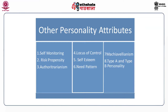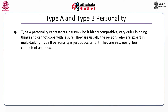Number eight is Type A and Type B personality. Type A personality represents a person who is highly competitive, very quick in doing things, and cannot cope with leisure. They are usually expert at multitasking. Type B personality is just the opposite — easy-going, less competitive, and relaxed.